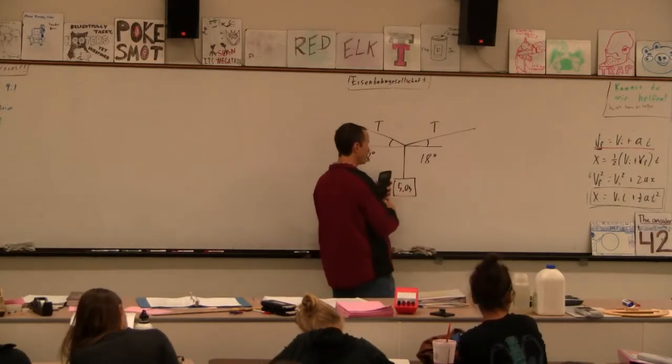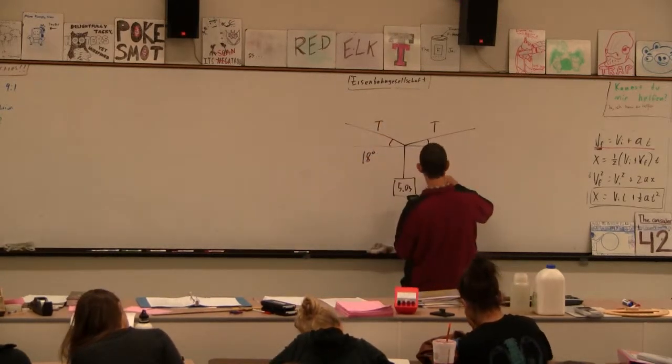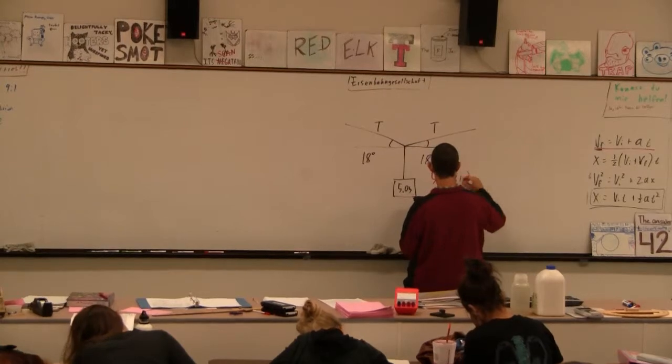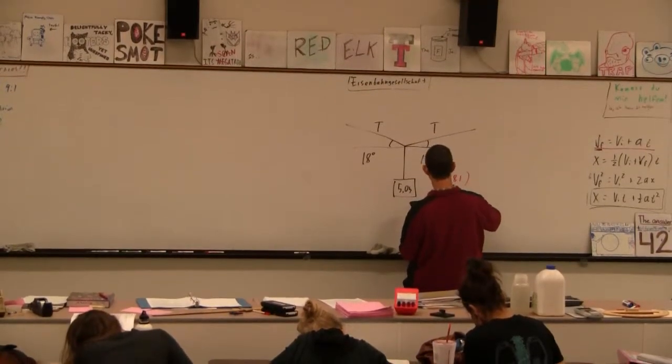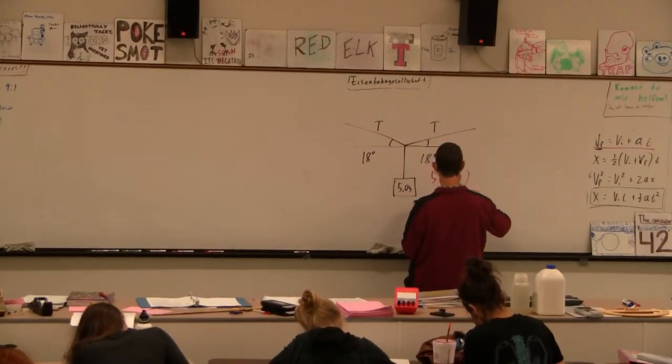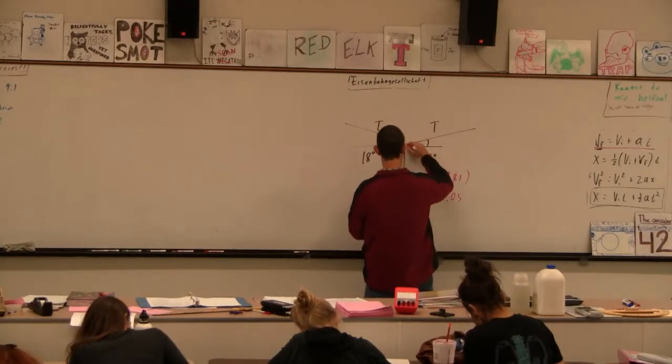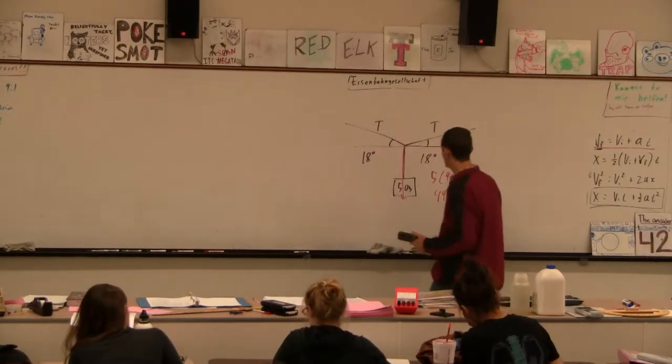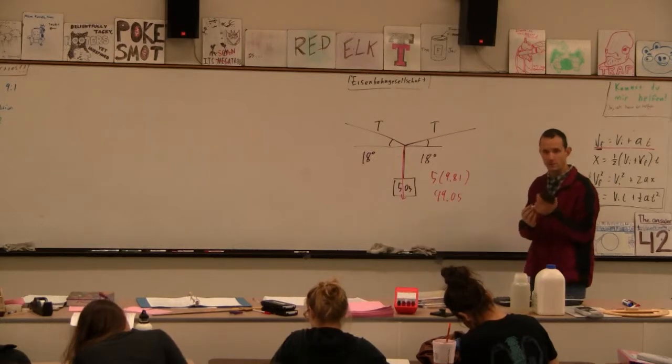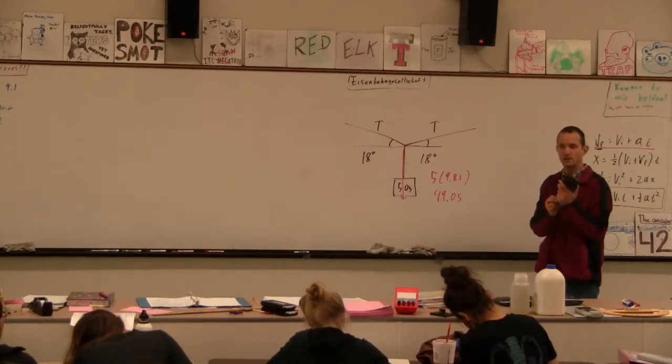There we go. So 5 times 9.81 is our force downward. 5 times 9.81 is 49.05 newtons, and that's a downward force. I will draw that here. 49.05 newtons. And then what's our next thing?